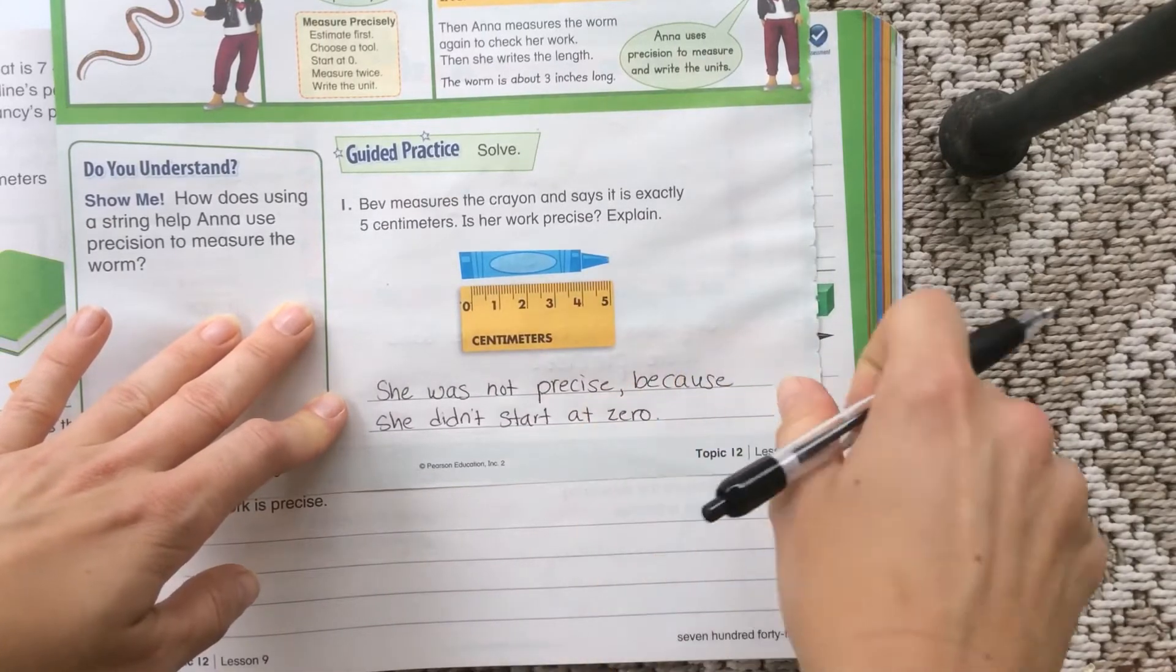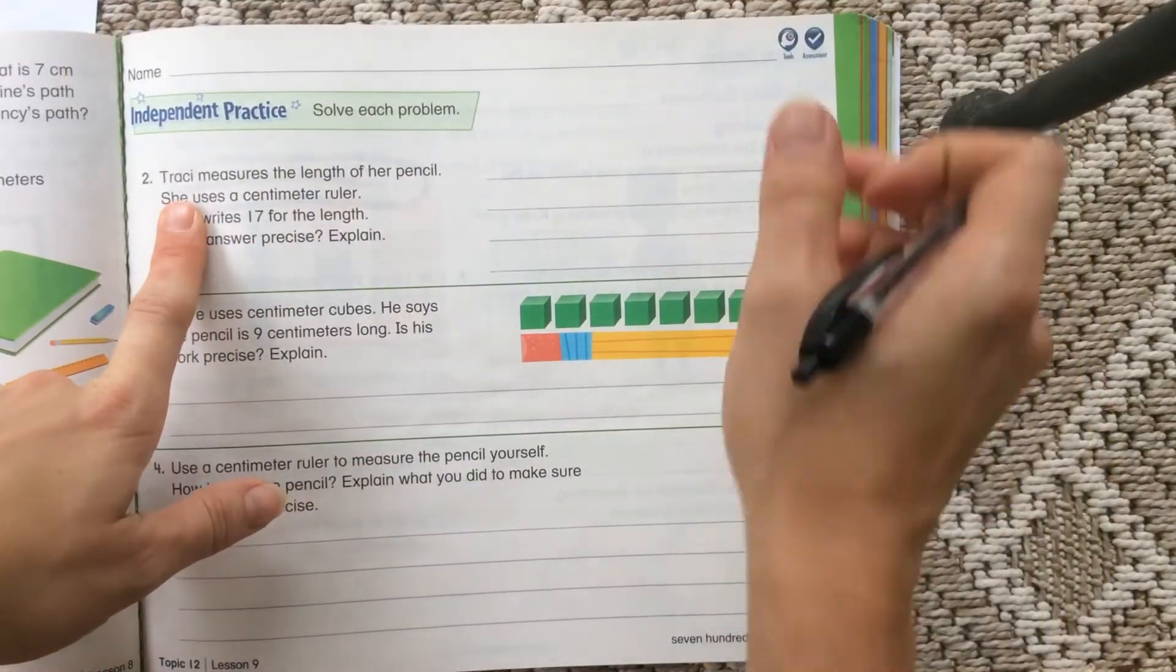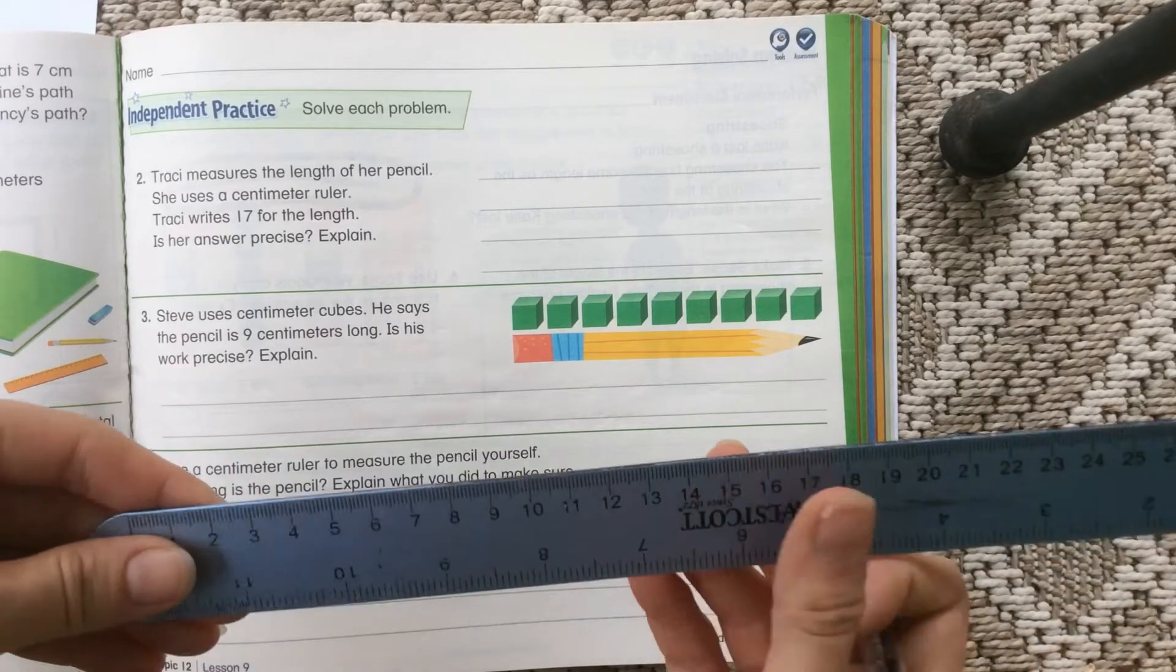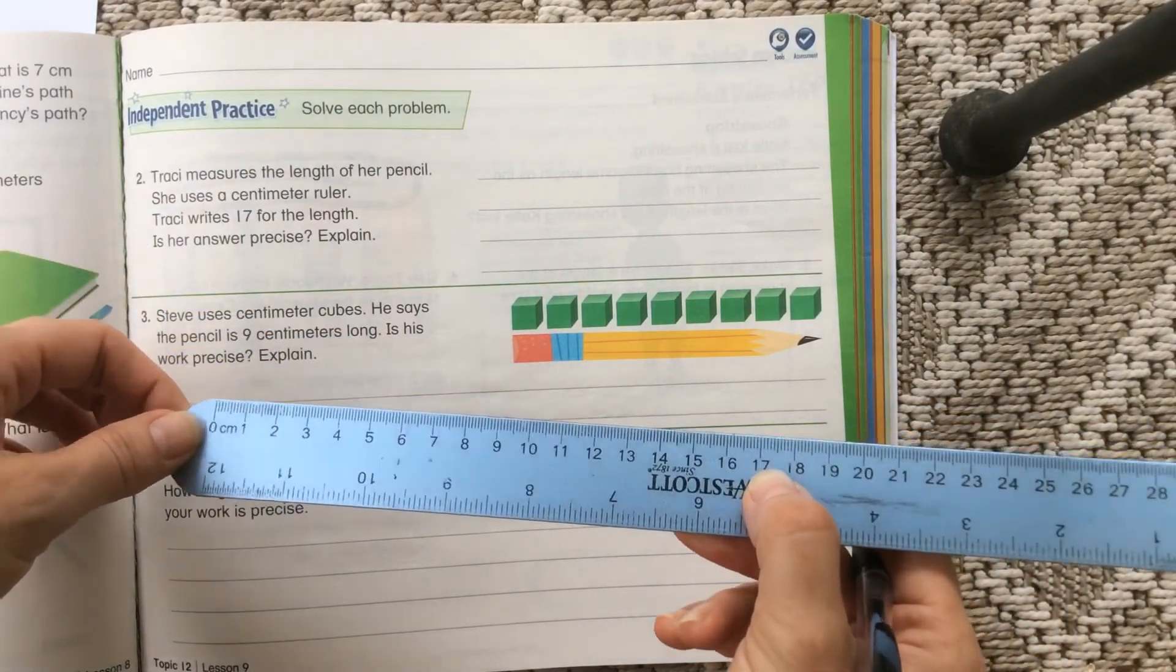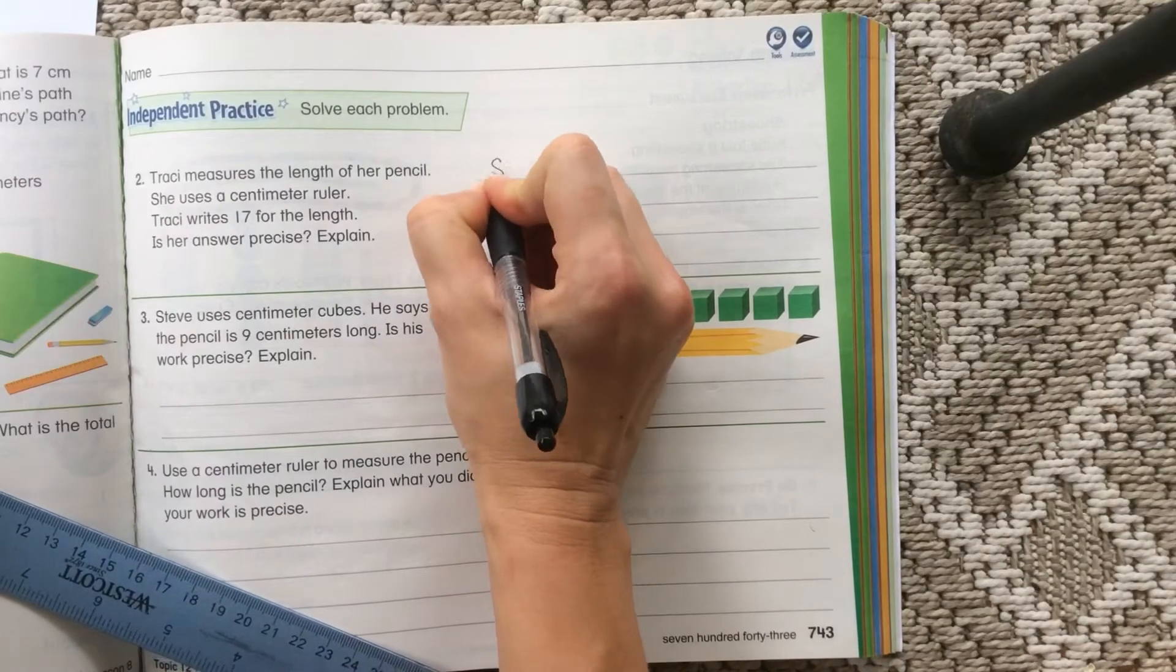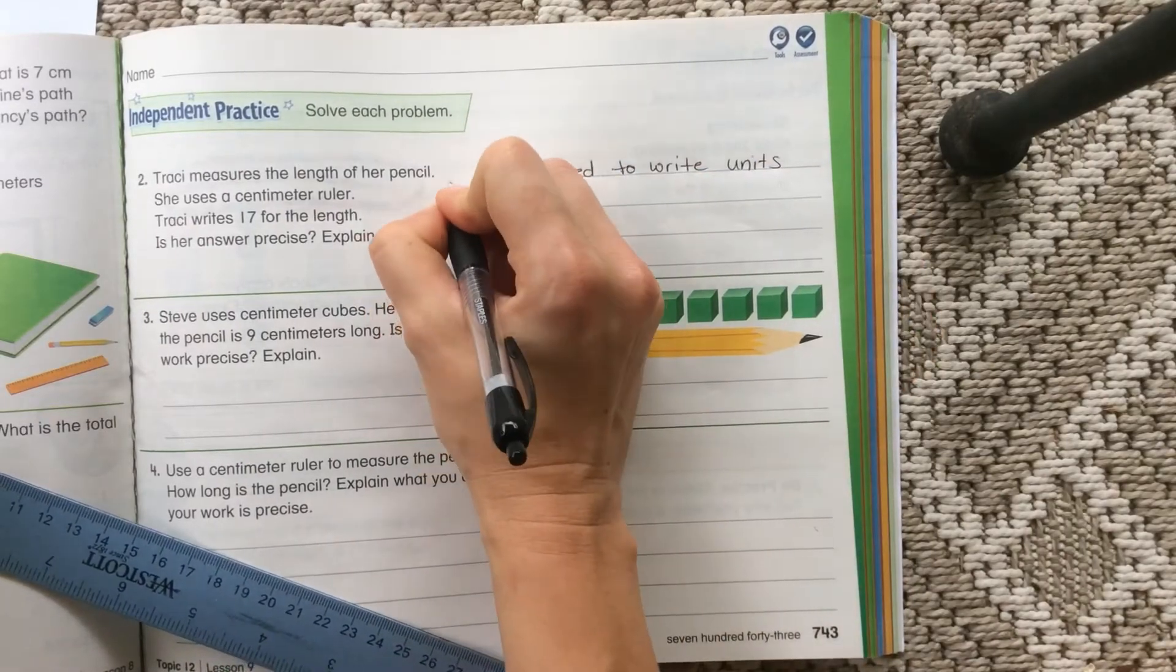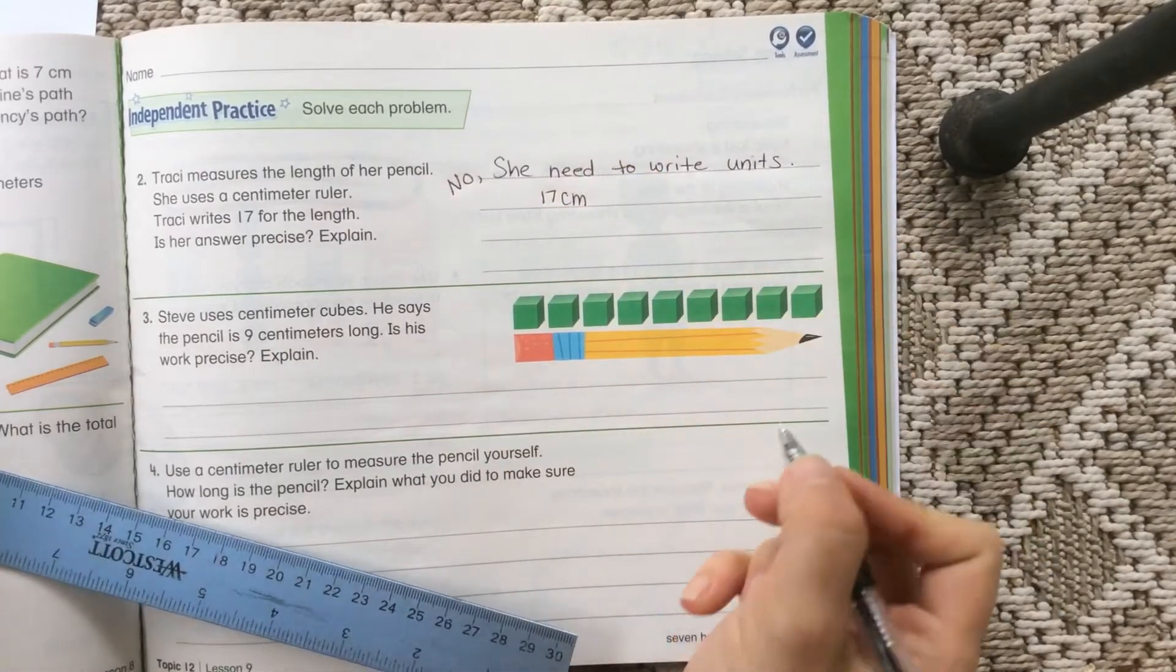When you are working, try to make sure you're spelling the word because correctly. Because we are using that in spelling, we should be spelling it correctly. So Tracy measures the length of her pencil. She uses a centimeter ruler. Tracy writes 17 for the length. Is her answer precise? I had a lot of friends when we did this in class that were measuring their pencil and they're like, yeah, 17. That seems pretty right for a pencil. So her measurement wasn't incorrect. The problem was that she just said 17 and she didn't tell us what she measured in. So I'm going to put, she needs to write units. Maybe for me to be more precise in my writing, I could put, no. She needs to write units. So she should have 17 centimeters.